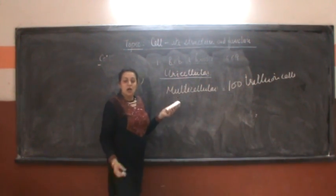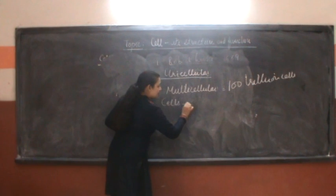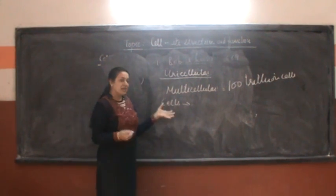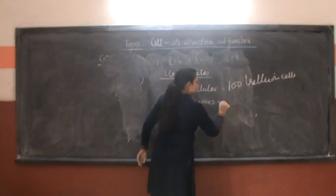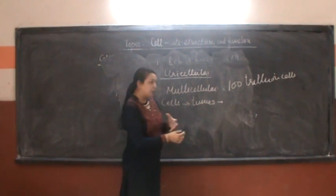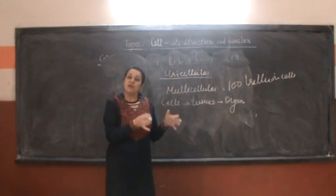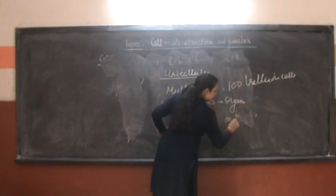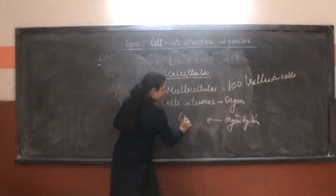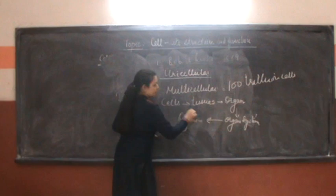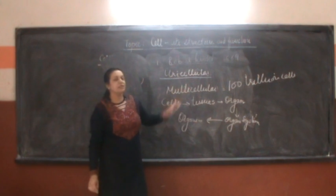Since we are multicellular, we have a level of organizational body. Our similar type of cells aggregate and come together to form tissues. The similar type of tissues come together to form an organ. Similar functioning organs come together to form the organ system. And all the organ systems constitute an organism. That is called the level of organization in a multicellular organism.